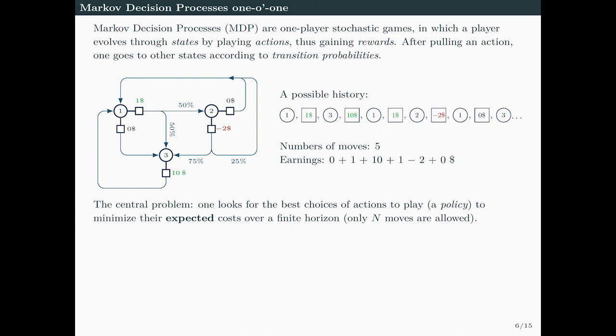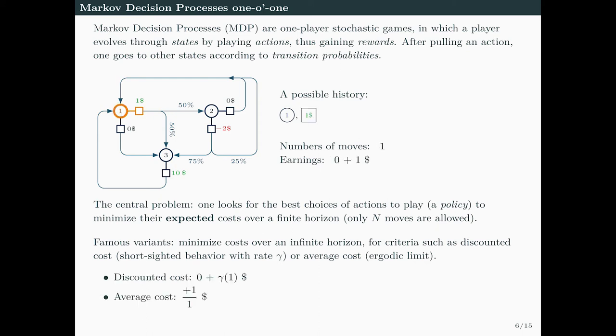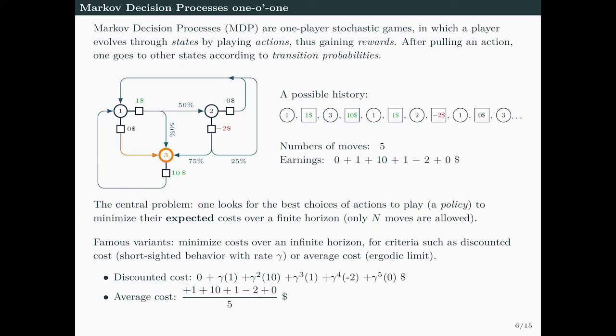The central problem is that one looks for the best choices of actions to play, what we call a policy, to minimize the expected costs over a finite horizon. Let's say we have only n moves to play. Among variants, a big question is can we minimize costs over an infinite horizon for criteria such as discounted costs or average costs. For discounted costs, the more your earnings happen far in the future, the more they get discounted. As far as average cost is concerned, you compute the mean and your goal is to minimize these limits as the number of moves tends to infinity.